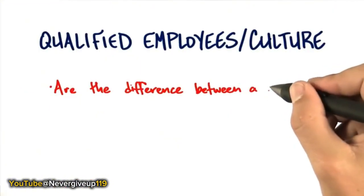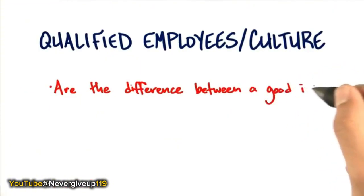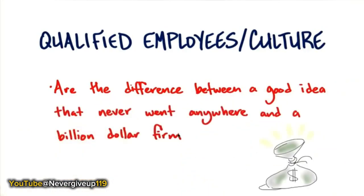The last part about human resources: qualified employees and the culture you set for your company. Qualified employees are the difference between a good idea that never went anywhere and a billion-dollar firm. A employees in a B market will always win over B employees in an A market. You want to always hire people better than you. You want people who can see further than you or have skills deeper than you — and that's the sign of a world-class founder.